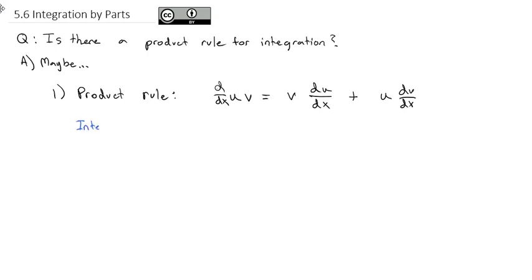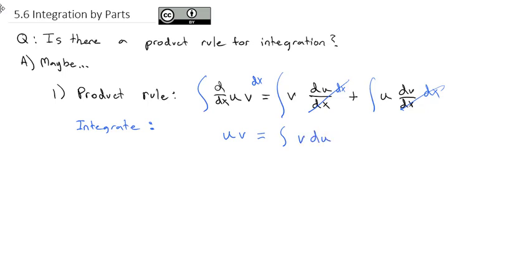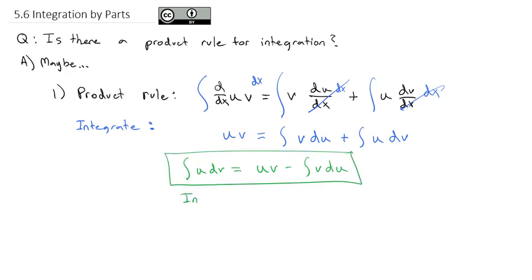If we integrate both sides dx and show the integrals piece by piece on the right side: on the left, we have the integral of the derivative — those are inverse operations, so we're just left with u times v. On the right, the dx's divide out, giving us the integral of v du plus the integral of u dv. Solving for the integral of u dv, we get uv minus the integral of v du — this is the formula we're going to call integration by parts.